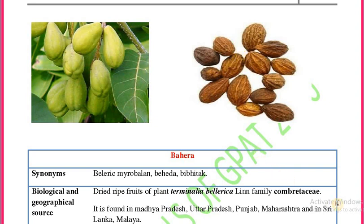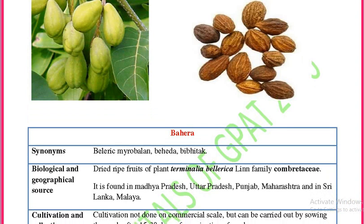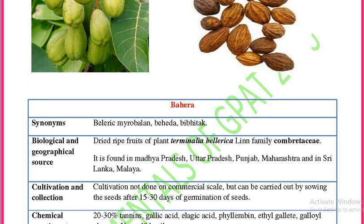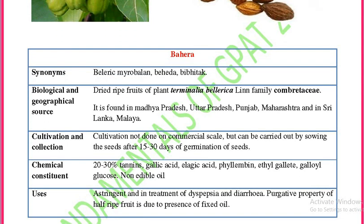The next drug is Behera, also known as Belerik Myrobalan, Behera, and Bibhitaki. The synonyms are Belerik Myrobalan, Behera, and Bibhitaki. Its biological source is the dried ripe fruits of Terminalia bellerica, family Combretaceae. It is found all over India and also in Sri Lanka.